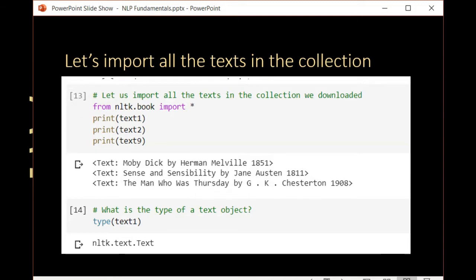Now, you can import all the text that exists in the collection you just downloaded by typing from NLTK.book, import everything. I'm only printing three samples. When you do it, it shows you all the samples. There are nine text samples.